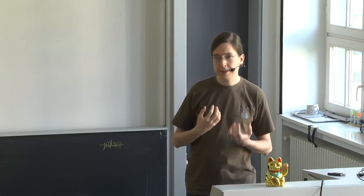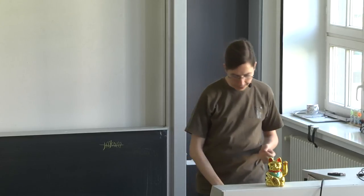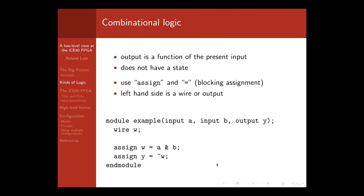In order to understand how the FPGA works, you need to know which kinds of logic can be represented. First there is combinatorial logic: you have a number of inputs and outputs, the inputs can each be zero or one, and the output only depends on the inputs at that time. For a given input of all zeros the output is always the same. This is done in Verilog using input, output, and wire symbols with the assign statement.